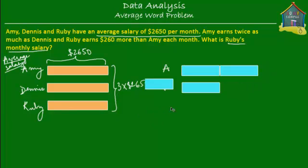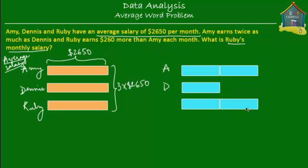So Ruby earns these two blocks plus $260 more. She earns these two blocks — one block and another block — the same as Amy, plus $260 more. So I'll put $260 here as a smaller block, which is $260. This is Ruby's salary R, and this is $260 more than Amy's salary.